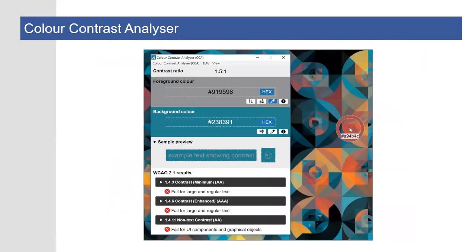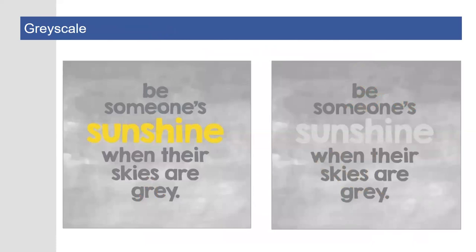Another tool our team likes is the Paciello Group's Color Contrast Analyzer, which works on the web and with documents and images on your computer. You can enter color codes to check or use an eyedropper tool to select colors. Both are free and links will be included in the follow-up email. There's also a low-tech way to check: print or recolor the image in grayscale. When recoloring the sunshine example in grayscale, you can really see that the yellow on gray has poor contrast as well. Having sufficient contrast benefits everyone — in bright sunlight, in the back of a large lecture hall, with an older projector, or in a room with glare on the screen.